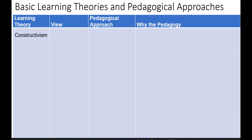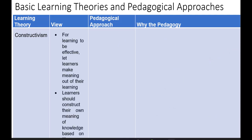The third theory is Constructivism. The view of the constructivist is that for learning to be effective, learners should make meaning out of their learning. They should be able to construct their own meaning or knowledge based on their experience. It should not just be a one-way approach whereby one person dishes out everything — but allow the learner to interact with their environment and come up with meaningful knowledge from what they have understood within their own environment.